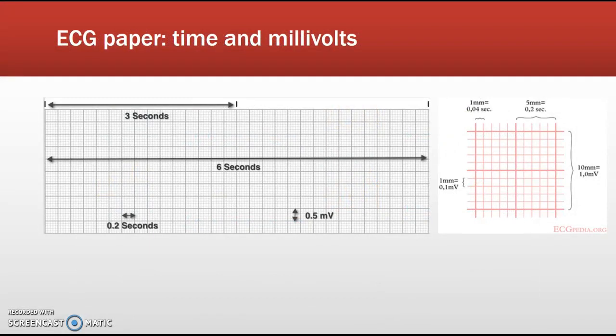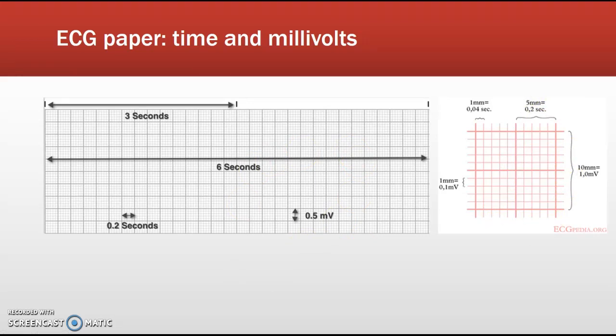Understanding the ECG paper is integral to correctly interpreting what you are seeing. On the horizontal axis, the boxes represent time — the smallest box equals 0.04 seconds, the next largest 0.20 seconds, with marks designated for passage of three seconds and six seconds. On the vertical axis, the paper represents millivolts of electricity and will show an upward or downward deflection depending on the direction the electrical stimulus is traveling.